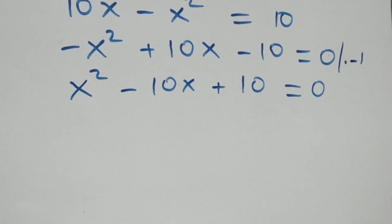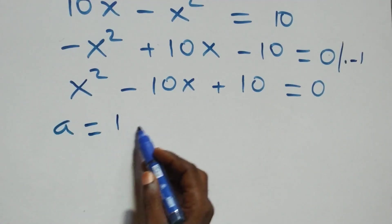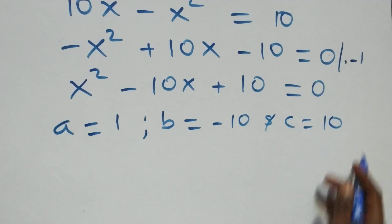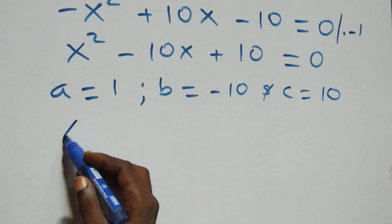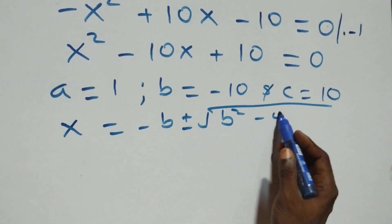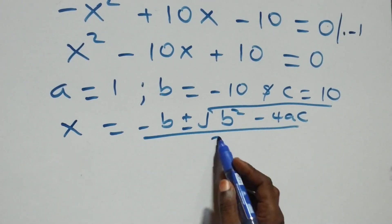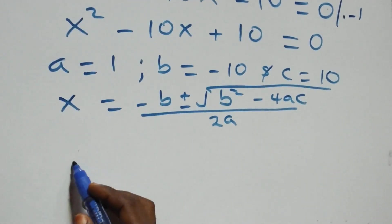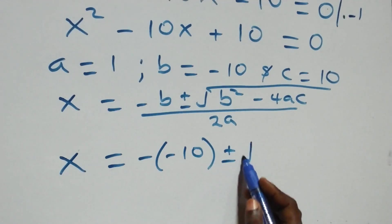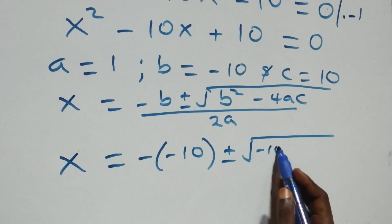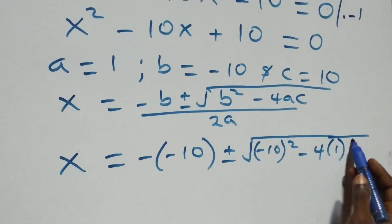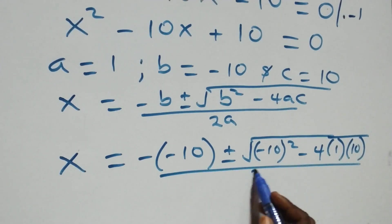We have a quadratic equation where a equals to one, b equals to minus ten, and c equals to ten. We apply the quadratic formula: x equals to minus b plus or minus square root of b squared minus four ac, all over two a. Substituting, this becomes x equals to minus negative ten plus or minus square root of negative ten squared minus four times one times ten, all over two times one.